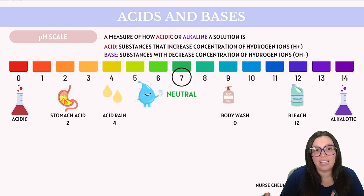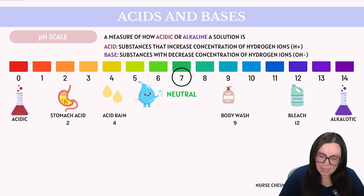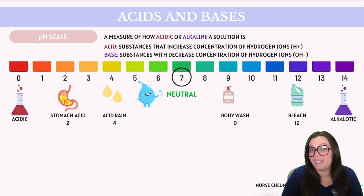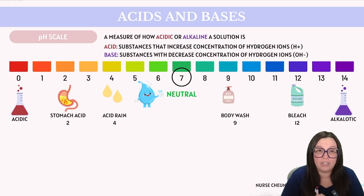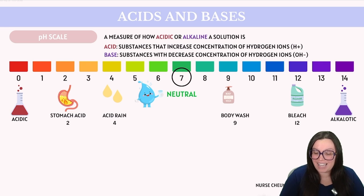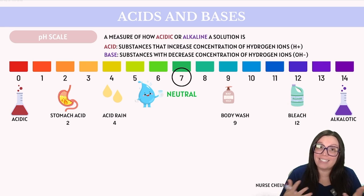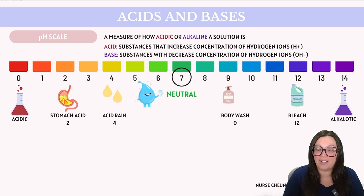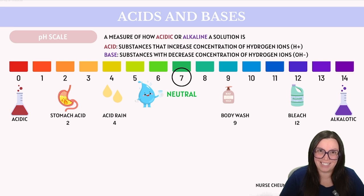Moving to alkalines, common household items provide good examples. Body wash typically has a pH of around 9, making it mildly alkaline. Bleach has a pH closer to 12, indicating a very strong alkaline. Keep in mind that examples like these are provided to help conceptualize the pH scale — you don't have to memorize these specifically for your ATIs.